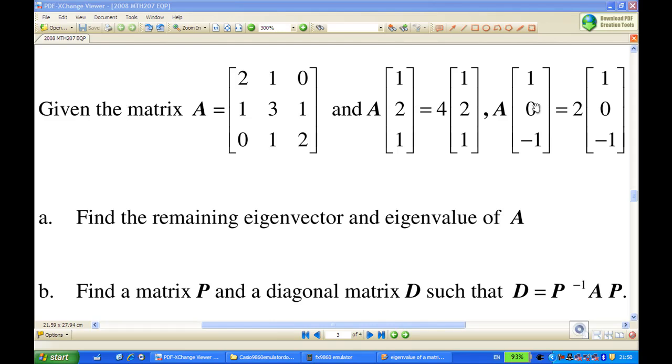In the earlier part, we have found the remaining eigenvector and eigenvalue of A, which is eigenvalue equal to 1, eigenvector equal to [1,-1,1]. Now, we are going to answer part B: Find a matrix P and a diagonal matrix D such that D equals P inverse A P.